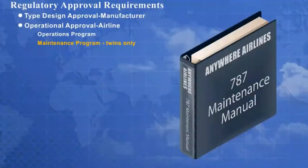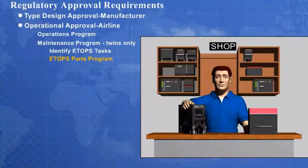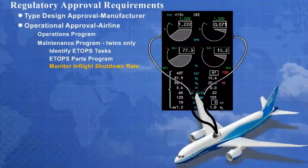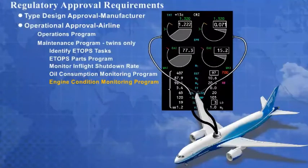An airline ETOPS maintenance program only applies to two-engine airplanes and must include the identification of ETOPS-related tasks, an ETOPS parts control program, monitoring of the airline's in-flight shutdown rate, an oil consumption monitoring program, and an engine condition monitoring program. This program is intended to identify engine anomalies early and also reduce the possibility of a problem during a prolonged single-engine diversion.